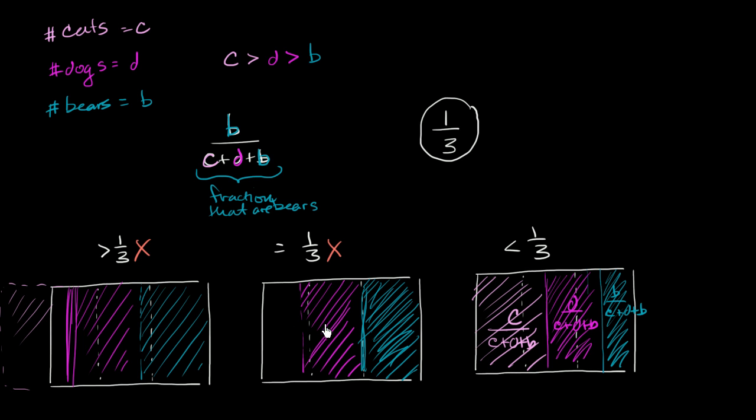In the last video, we made a visual argument as to why this expression has to be less than 1 third. And this expression, we already figured out, is the fraction that are bears.